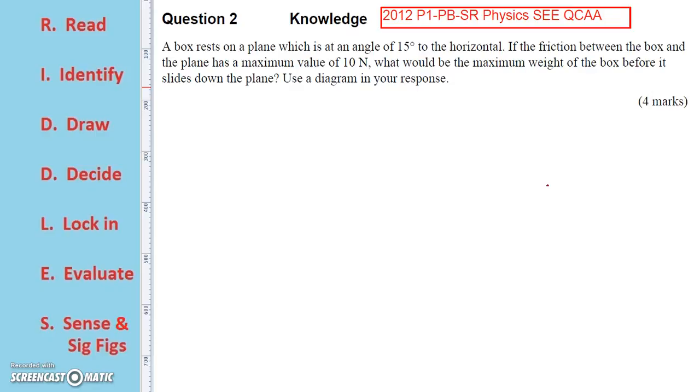A box rests on a plane which is at an angle of 15 degrees to the horizontal. If the friction between the box and the plane has a maximum value of 10 newton, what would be the maximum weight of the box before it slides down the plane? Use a diagram in your response.